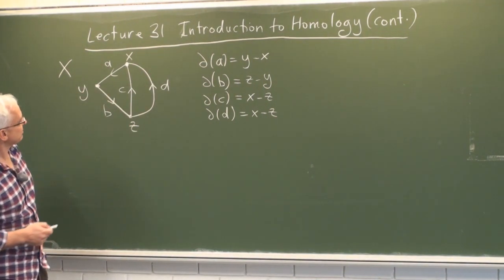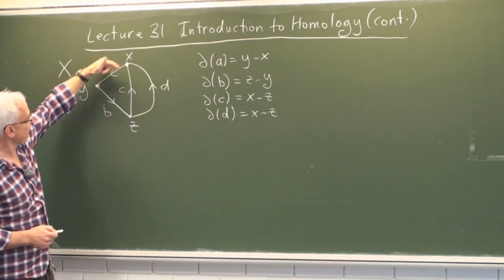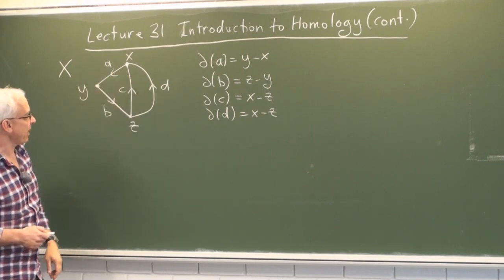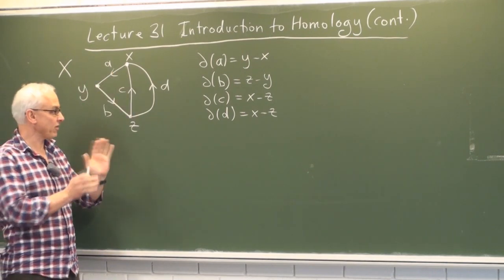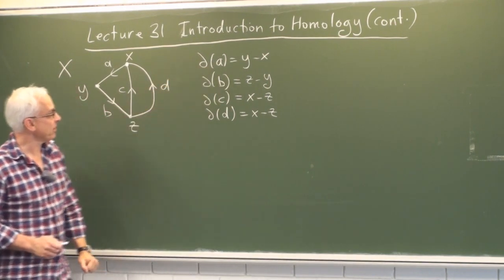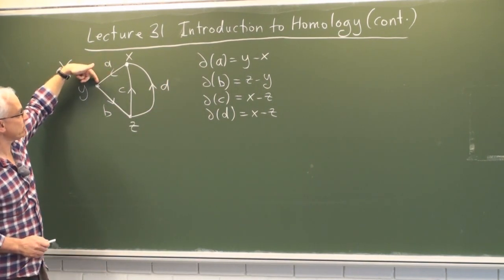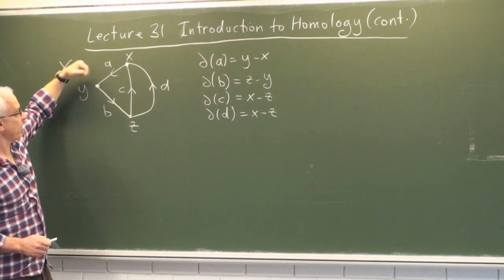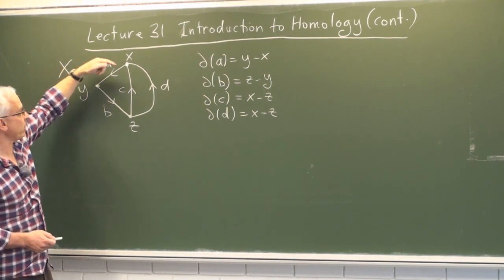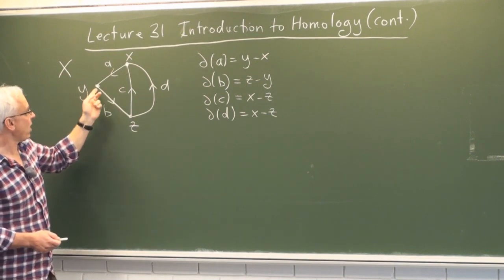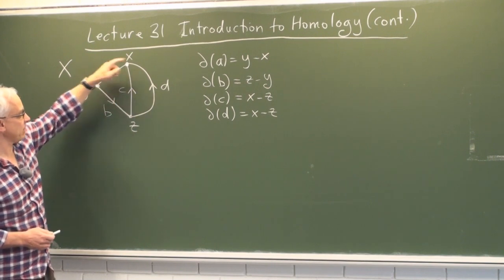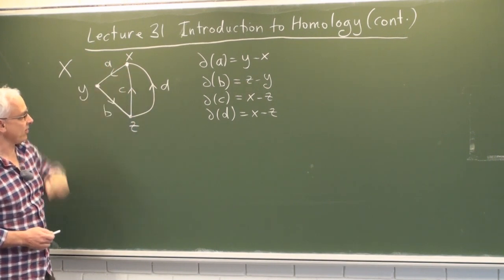The space X has three vertices X, Y, and Z, and four edges A, B, C, and D. It's basically just a one-dimensional graph. We defined the boundary operator taking a directed edge — for example, A — to the formal difference between its final point and its initial point, so Y minus X. The boundary of B was Z minus Y, and the boundary of both C and D were X minus Z.